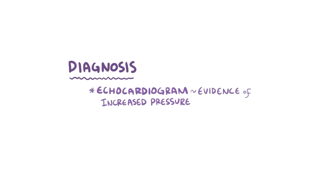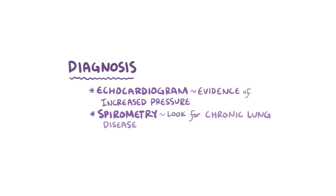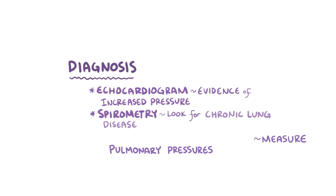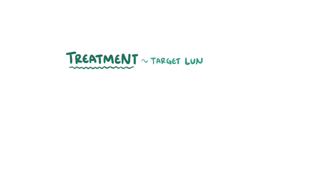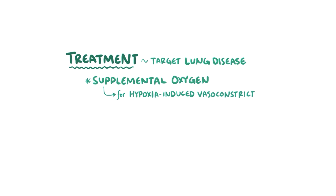The diagnosis of cor pulmonale is usually made with an echocardiogram that shows evidence of increased pressure in the pulmonary arteries and right ventricle. Follow-up tests can be done to identify the underlying cause — for example, spirometry can be done to look for chronic lung disease. The gold standard diagnostic test to directly measure pulmonary pressures and assess for response to vasodilating medications is a right heart catheterization. Treatment for cor pulmonale targets the underlying lung condition, and supplemental oxygen can help with hypoxia-induced vasoconstriction.